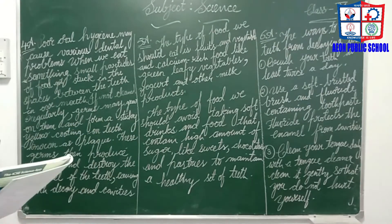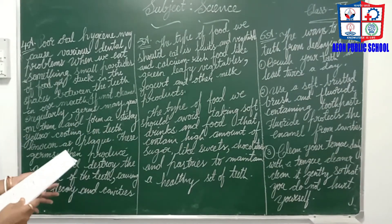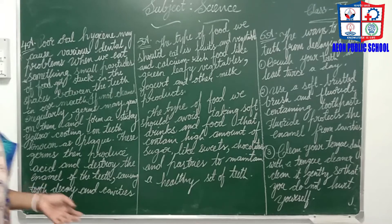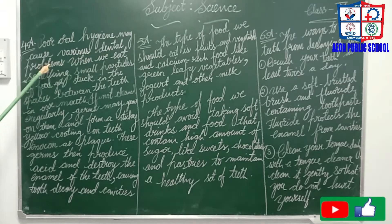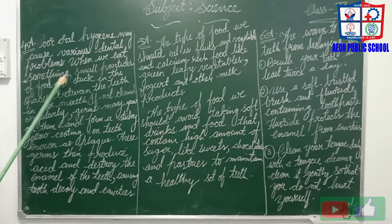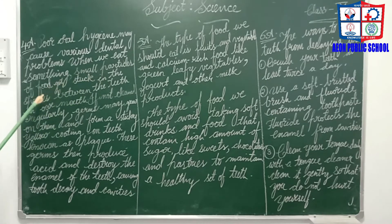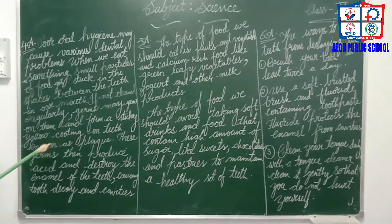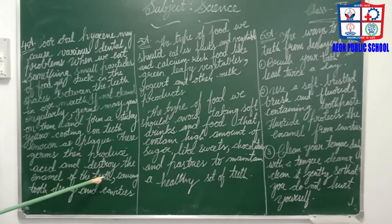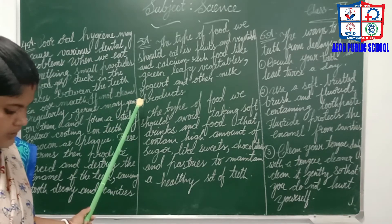Fourth question: explain how a tooth can decay. Poor oral hygiene may cause various dental problems. When we eat something, small particles of food get stuck in the spaces between the teeth. If not cleaned regularly, germs may grow on them and form a sticky yellow coating on teeth known as plaque. These germs then produce acid and destroy the enamel of the teeth, causing tooth decay and cavities.